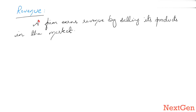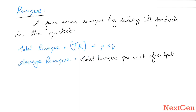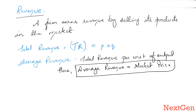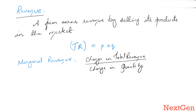A firm earns revenue by selling its products in the market. Total revenue equals price of the product multiplied by quantity of the product sold. Average revenue is total revenue per unit of output produced. For a price-taking firm, average revenue equals market price.